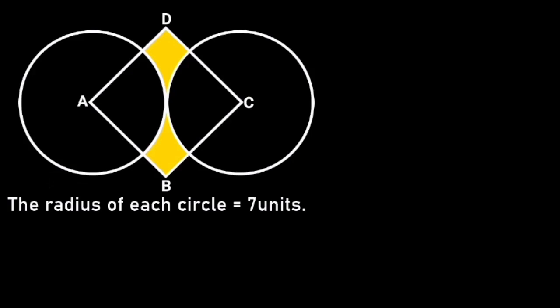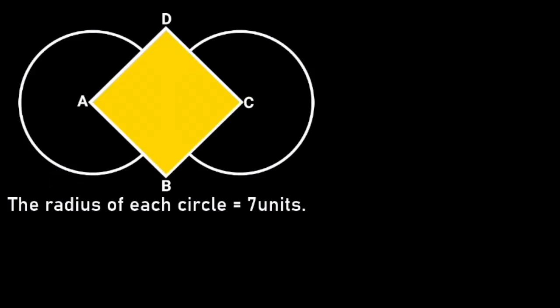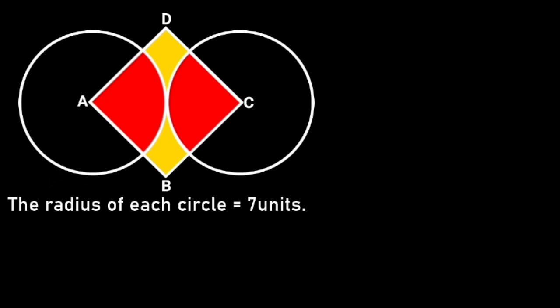To solve this problem, first let's note that the area of the shaded portion is equal to the area of the square minus the area of these two quarter circles.